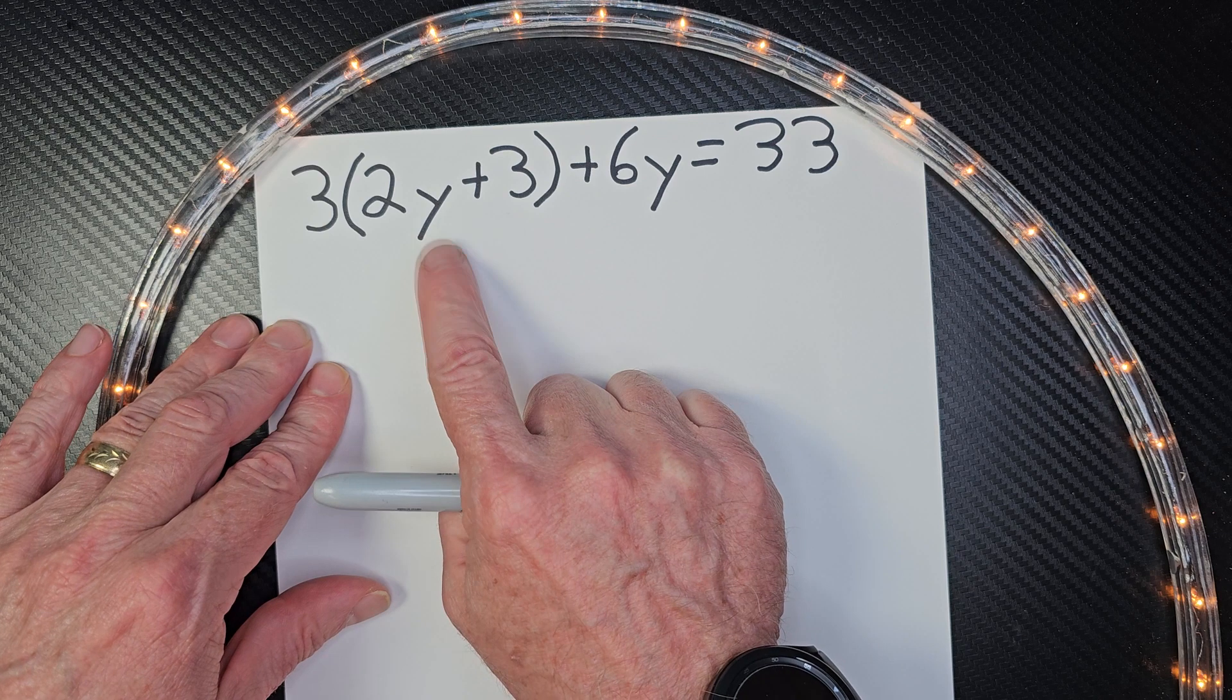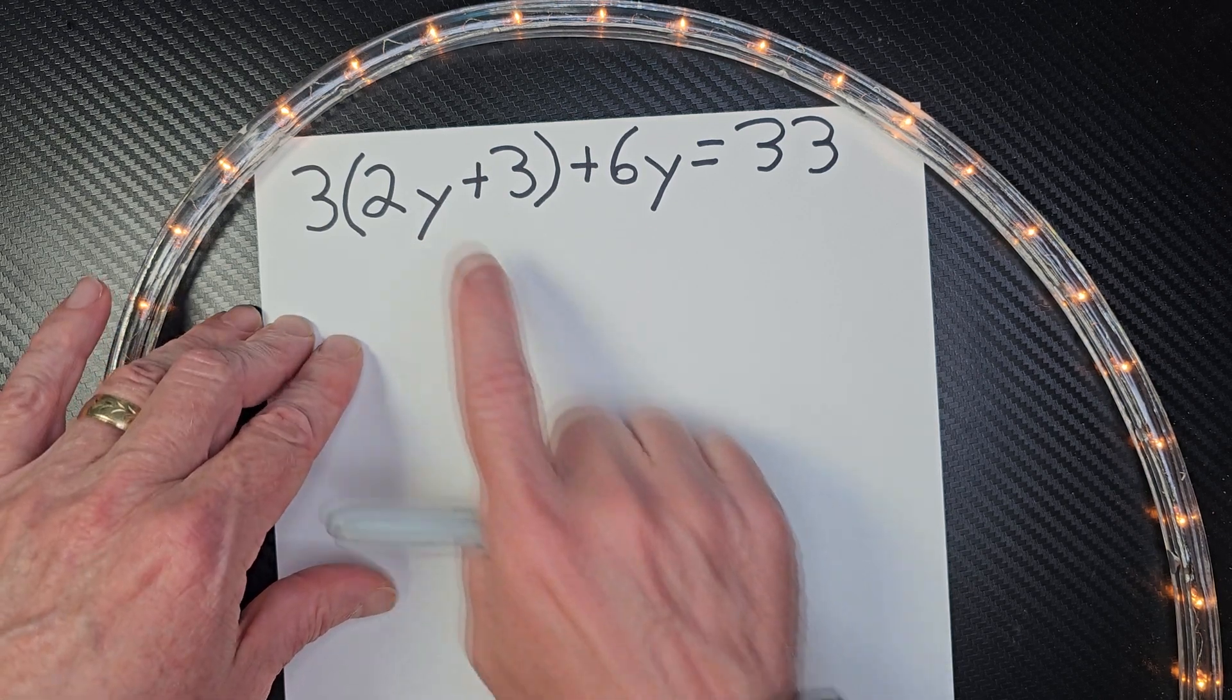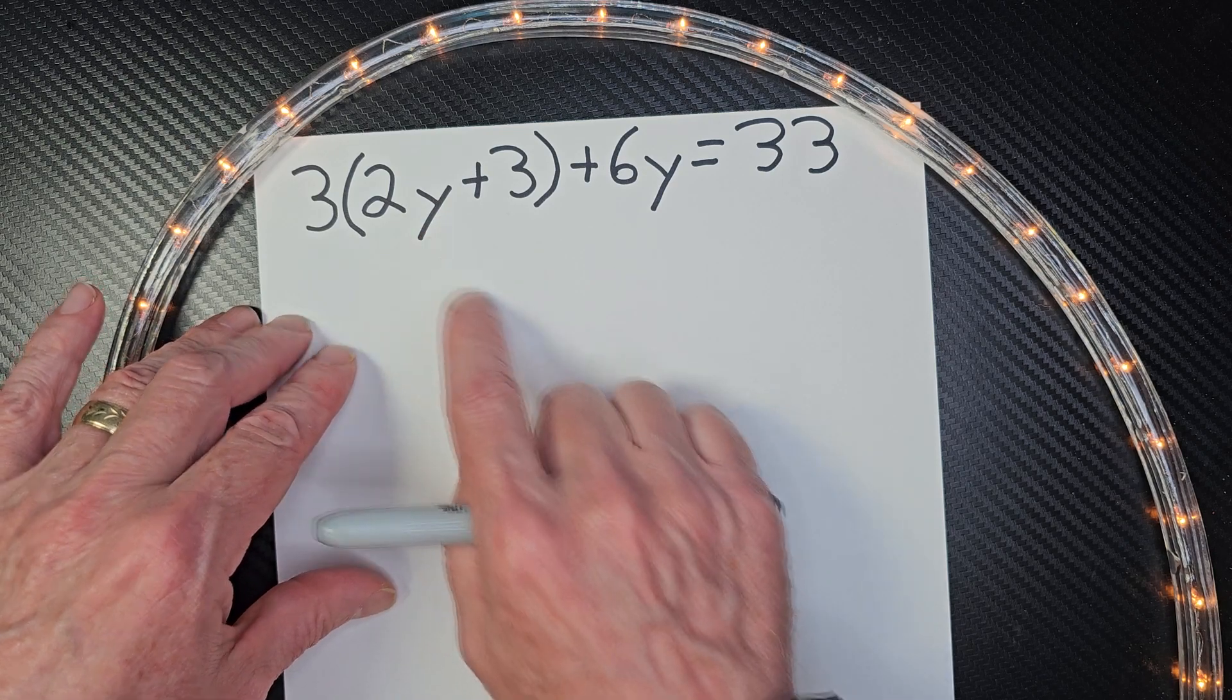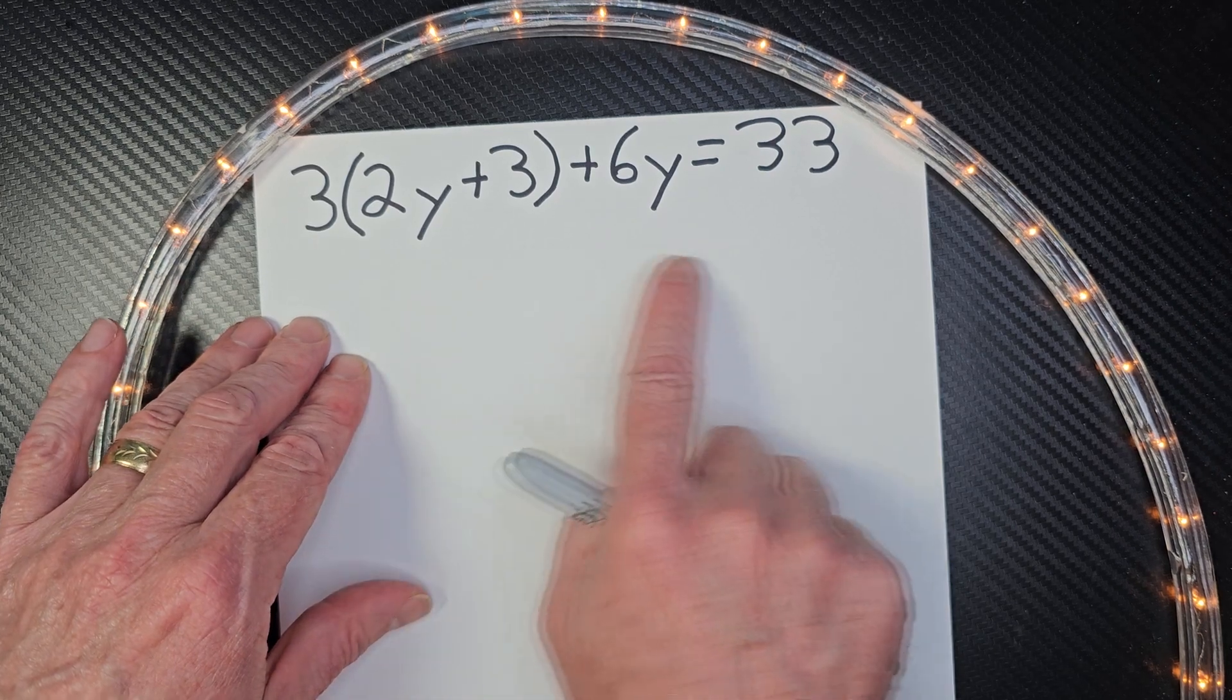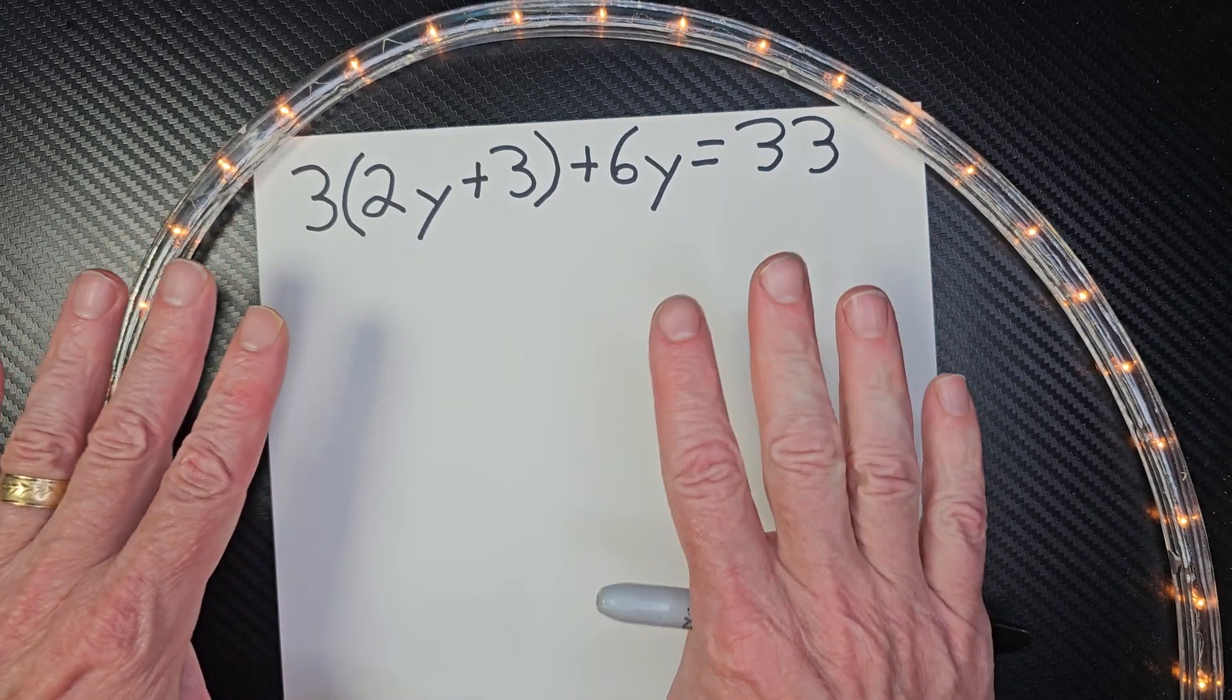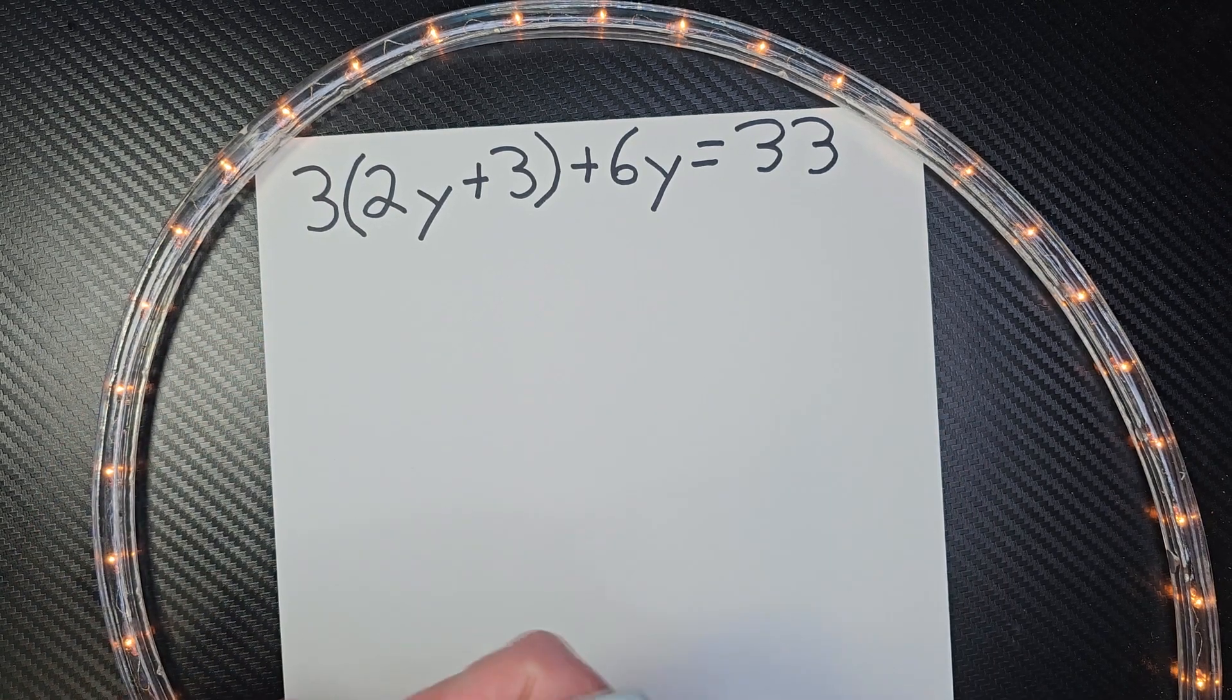We need to figure out the value for Y. And once we find the value of Y, we're going to put that in the place of Y and then check it with order of operations. So right now, see if you can go ahead and solve this. Hit the pause button, and when you're ready to check it with me, hit the play button. All right, let's begin.